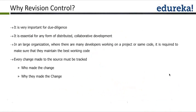Why do we need a revision control system? It is very important for due diligence and essential for any form of distributed and collaborative development. If you have a team of 10 people working from 10 different locations on a common project, all 10 need to be in sync with files stored in a common location — that is when version control is needed.